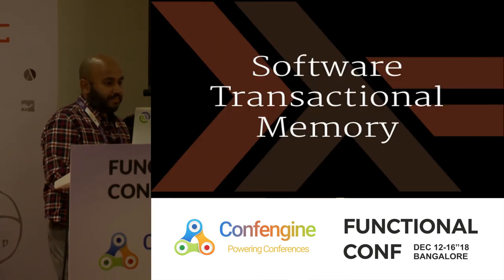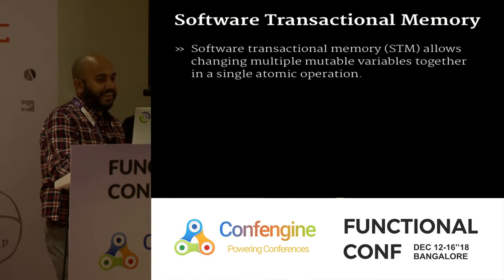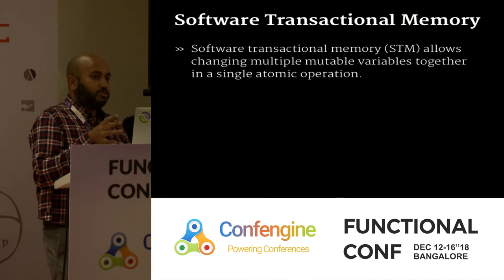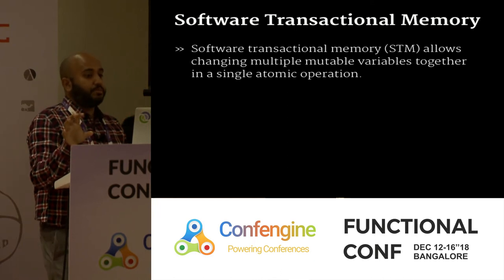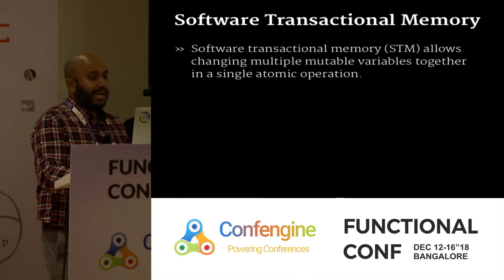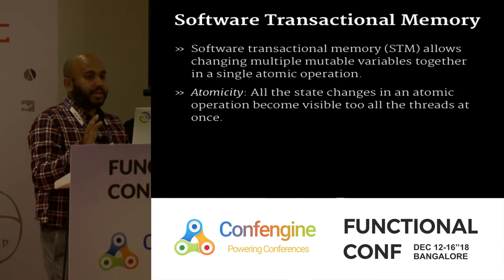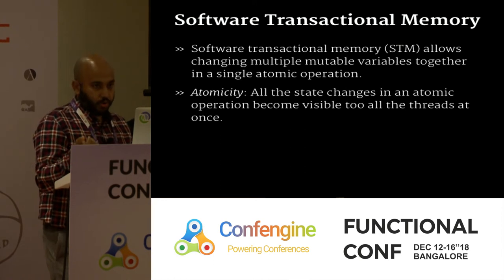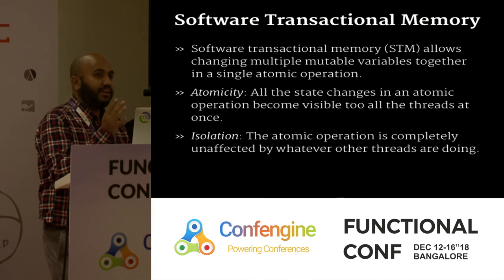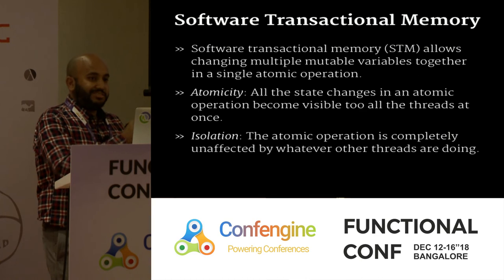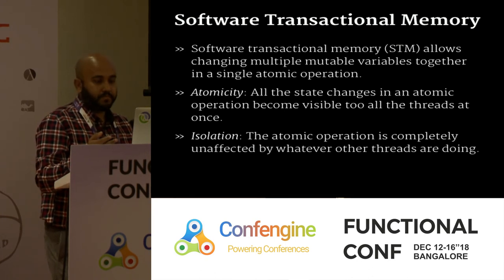Let's move to the next section: software transactional memory. STM lets you change multiple mutable variables together in a single atomic operation — exactly what actors cannot do well. That gives you atomicity: all changes to n variables become visible to every other thread at the same time, or they don't. And isolation: one operation is completely unaffected by others — it's as if you take a snapshot at the beginning, work on the snapshot, and it's independent of all other threads doing transactions on those variables simultaneously.